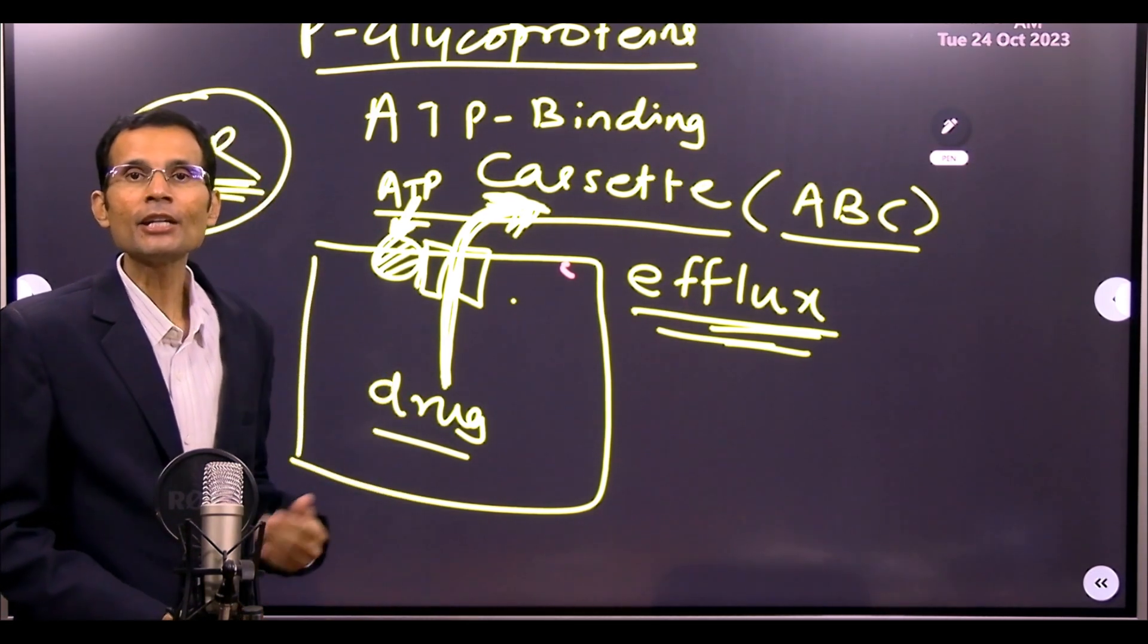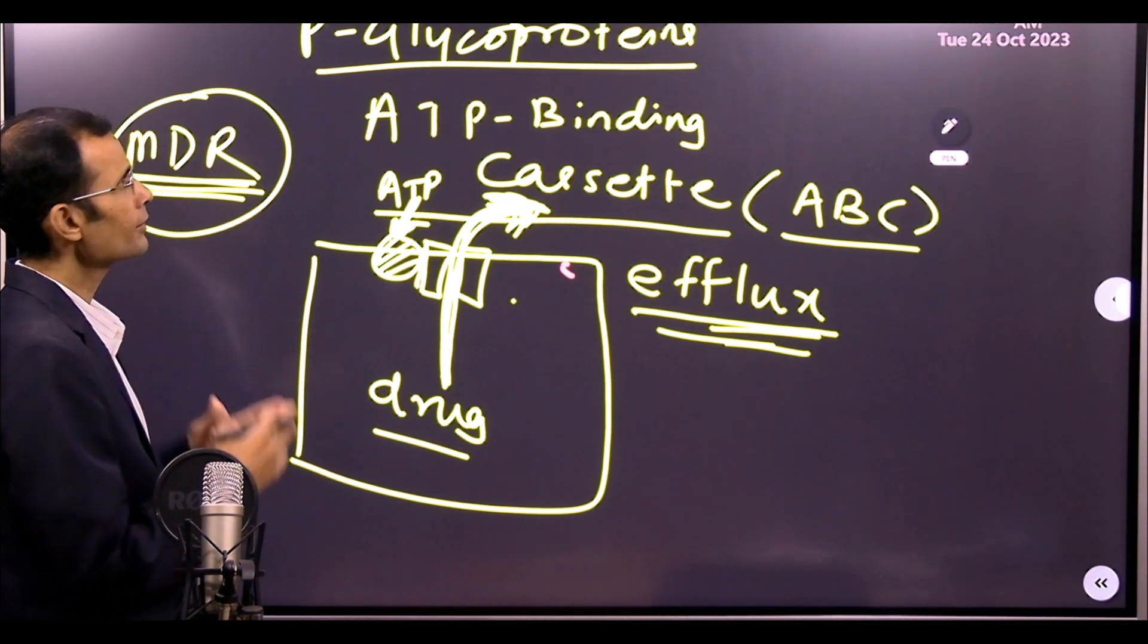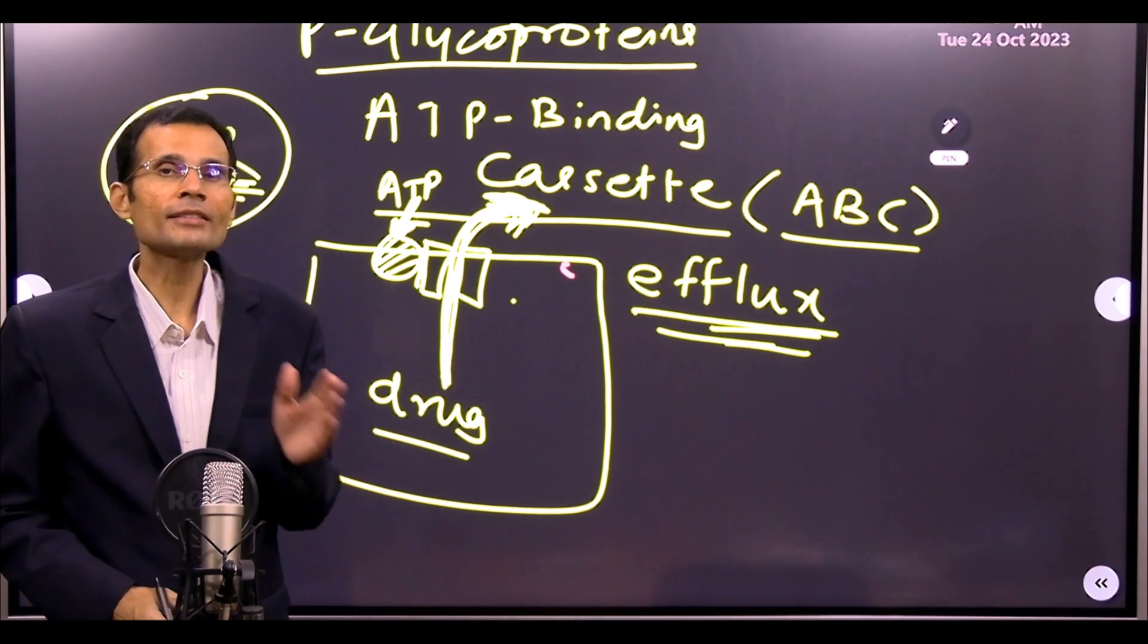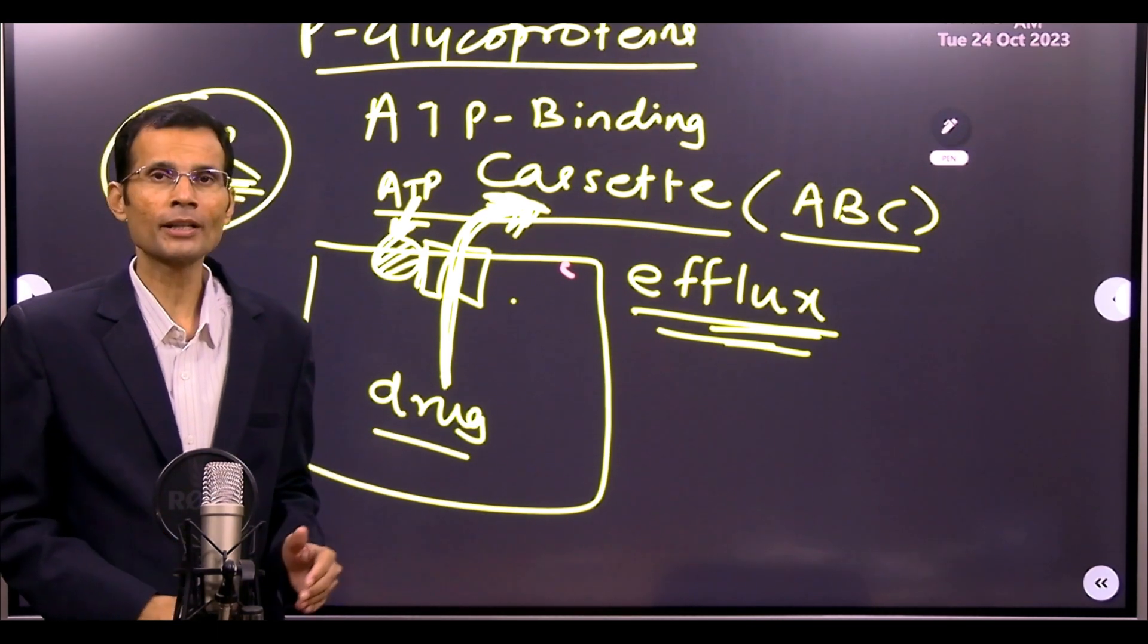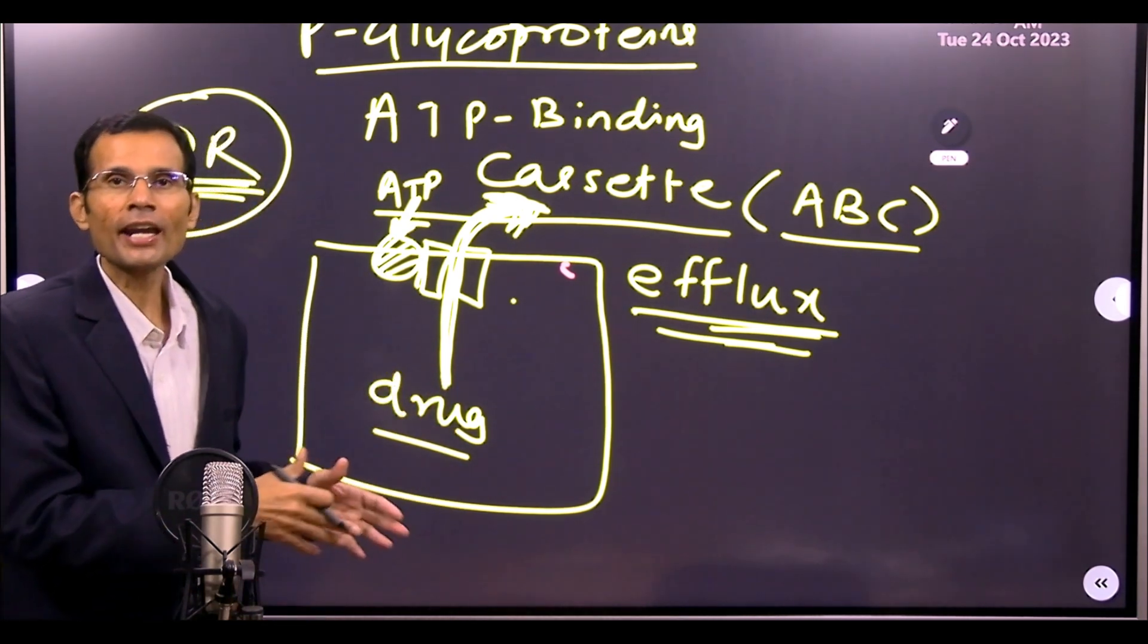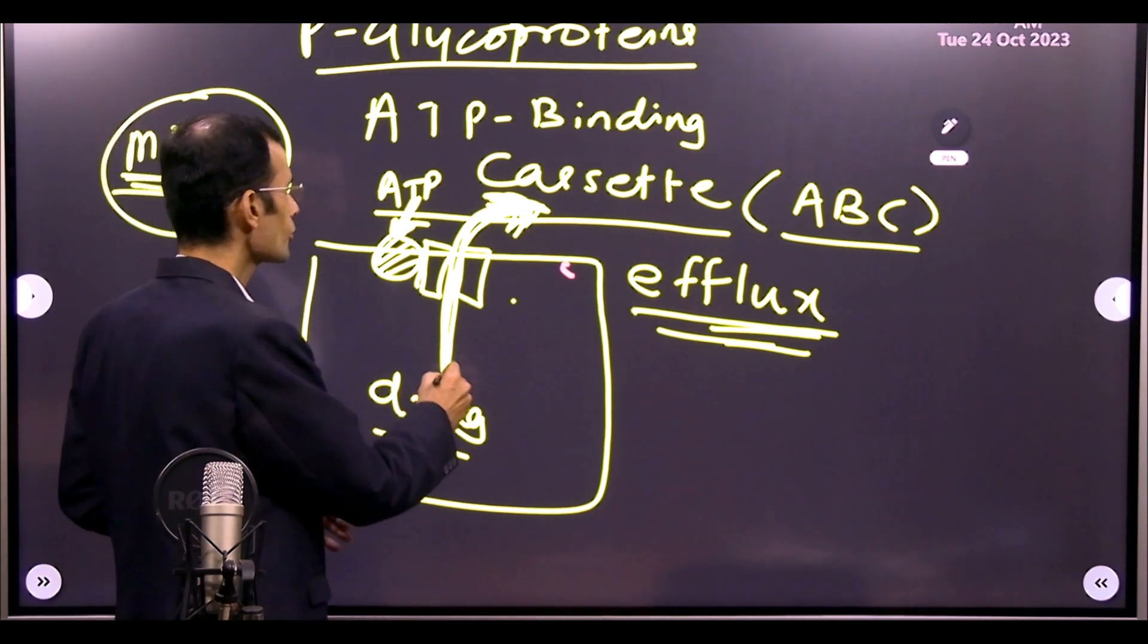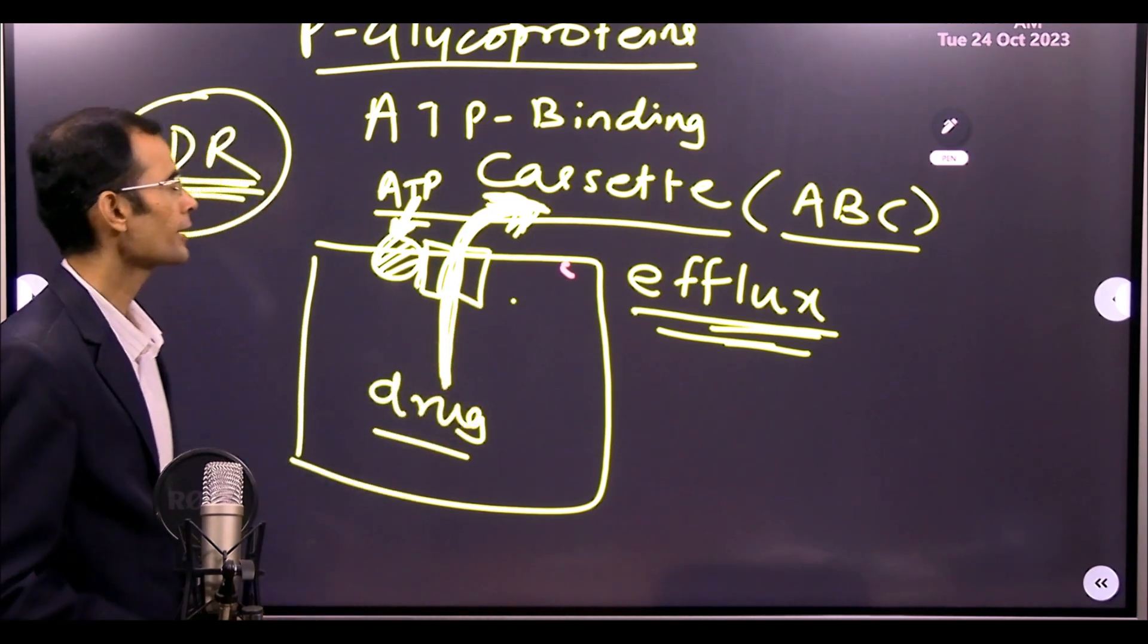They efflux the drug. That is how resistance develops. So the answer was ABC transporter. It must have got expressed or overexpressed in this patient, and the drug could not stay inside the cell because it was simply thrown out, pumped out or effluxed from those cells.